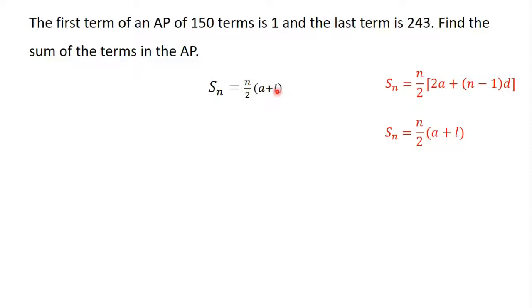Where a is the first term, l is the last term, and n is the number of terms in the AP. In the question, we are told that the number of terms in the AP is 150, the first term is 1, and the last term is 243.